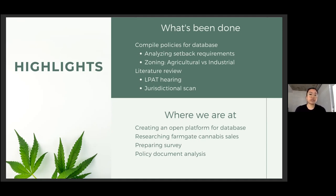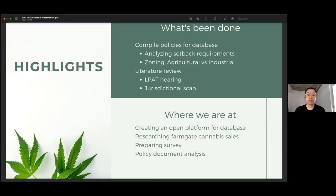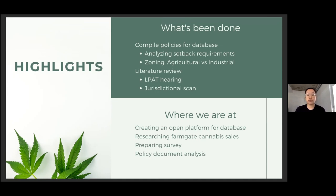We are comparing definitions, the setback range, permitted zones, indoor or outdoor growth, health production, minimum lot sizes, site plan control, and interim control bylaws — which is a planning tool to halt a certain land use for one to two years. For the summer, the cannabis team will be focusing on case studies, development of surveys, research into farm gate cannabis sales, and a deeper dive into data analysis to help identify emerging trends.